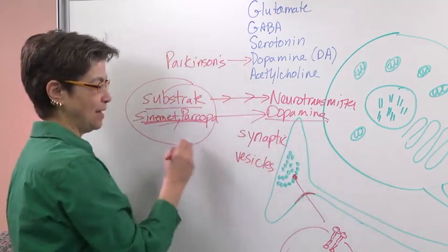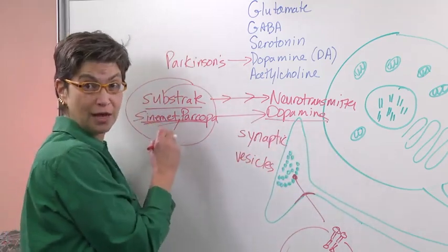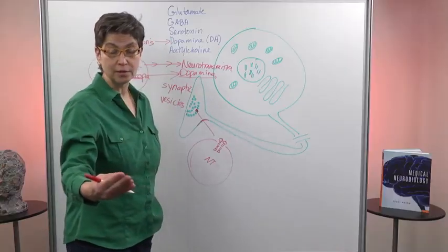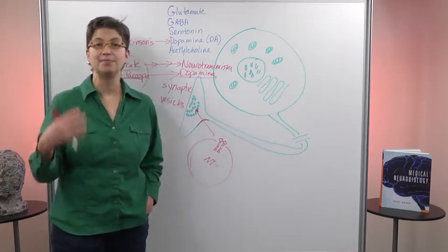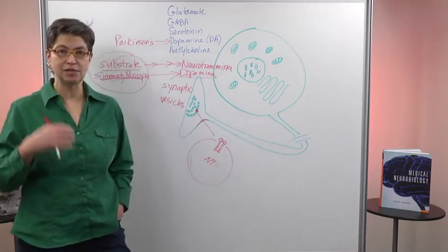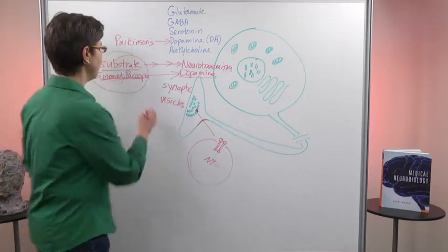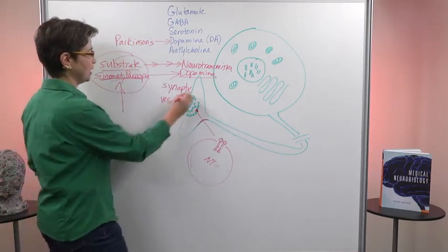Even if only a little bit of dopamine gets made—much less than what you start with—it's more than what the person has, and it alleviates their symptoms of Parkinson's. So you flood the system with substrate, and the goal is to get a little bit of that neurotransmitter out of the system.